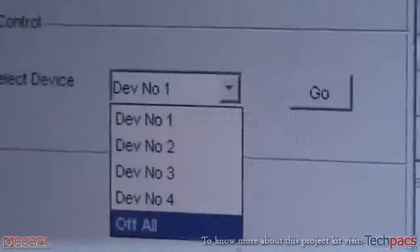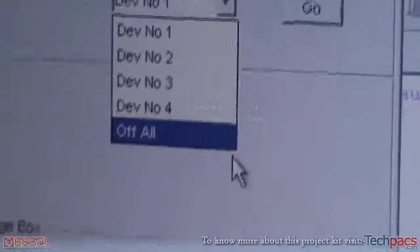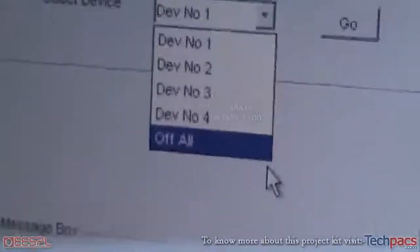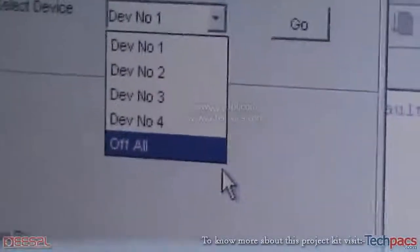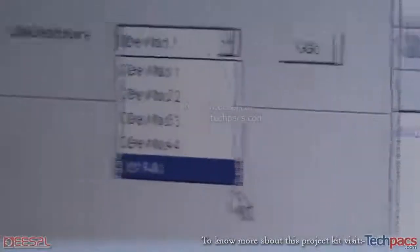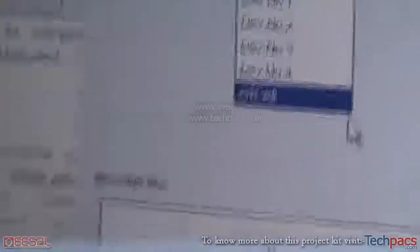Device number one, device number two, device number three and four. I can make one of the four on at a time, one of the four off at a time, and I can make all of them off at a time.